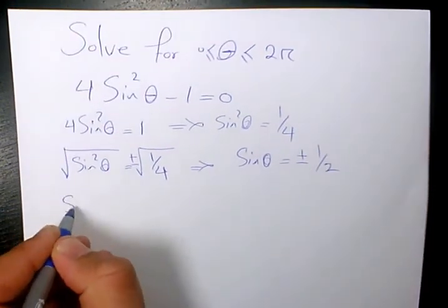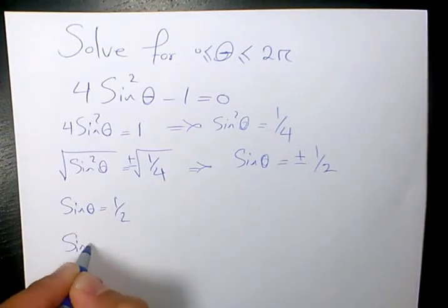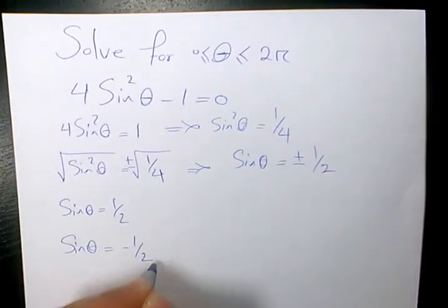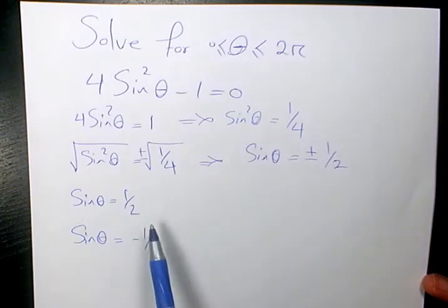So one answer is going to be sine theta equals 1 over 2, and one answer is going to be sine theta equals negative 1 over 2. So now we need to find out what kind of theta values make sine theta equal to 1 over 2 and what kind of theta values make sine theta equal to negative half.